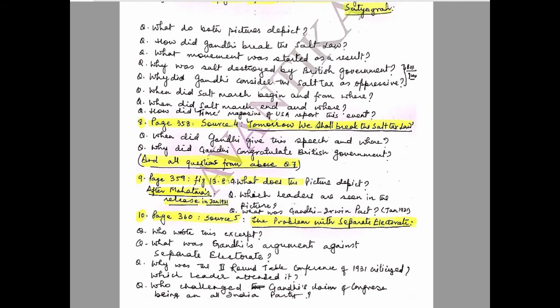Question 9: Page 359, Figure 13.8 — 'After Mahatma's Release in January 1931.' Questions: What does the picture depict? Which leaders are seen in the picture? What was the Gandhi-Irwin Pact of January 1931?